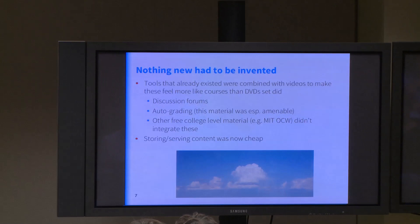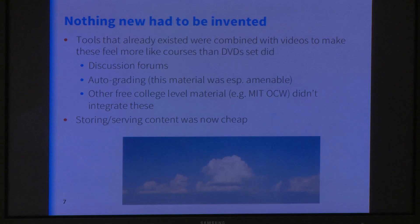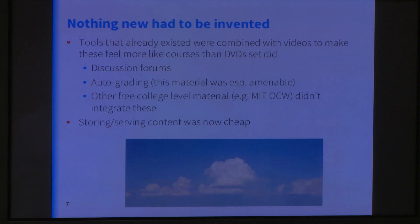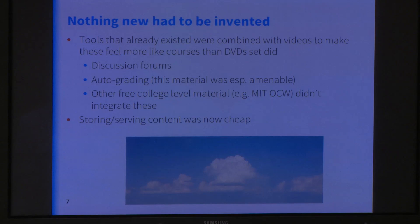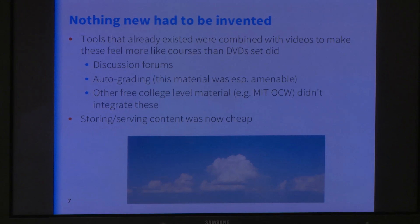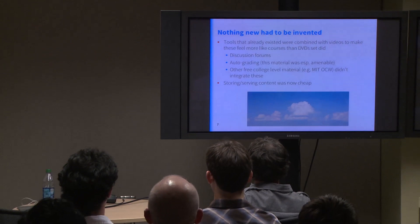There was a glamour factor — Stanford Computer Science is fancy and this stuff was free. Nothing new had to be invented; tools that already existed were combined with videos to make these feel much more than a DVD set. MIT had offered free college-level courses before as OpenCourseWare, but didn't combine them with other tools. The two most important tools for these first three classes were discussion forums, where people could discuss material and form a community, and auto-grading, which had been around but hadn't been incorporated to make a course before. Also, storing and serving content was now cheap — in the mid-90s it cost $400 to store an hour of video in the cloud; now it costs two cents.